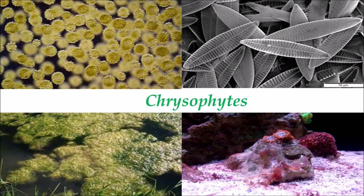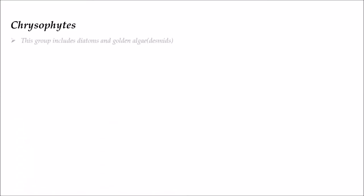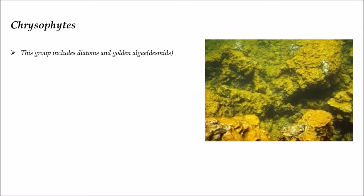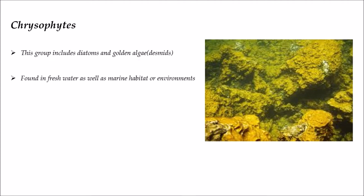As we have discussed about Kingdom Protista in my previous video, this is Chrysophyta. The Chrysophyta group includes diatoms and golden algae. Golden algae is also called Desmids. These are found in freshwater as well as marine habitat or environment.